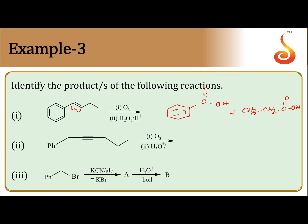These are the products obtained in the first reaction. Now let us see the second reaction. The reactant is an alkyne. On oxidative ozonolysis of an alkyne, the shortcut is: erase the triple bond and replace it with a carboxylic acid.